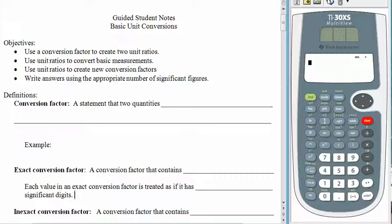It's a fairly straightforward process. The only thing we have to be careful of is that we remember we are working with measured quantities, and measured quantities have error associated with them. When we convert them into other units, that error tags along. So we want to make sure that we are not changing the error that goes along with a measurement.